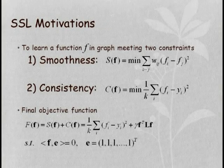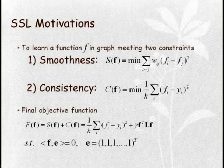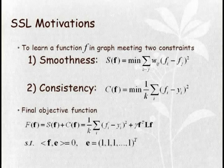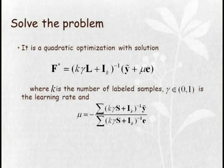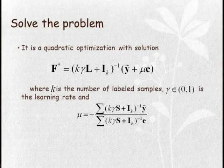The motivation of semi-supervised learning on graphs is to learn a function f on a graph meeting two constraints: one is smoothness, and the second is consistency. This leads to the final objective function, which results in a constrained optimization problem with closed-form solutions.